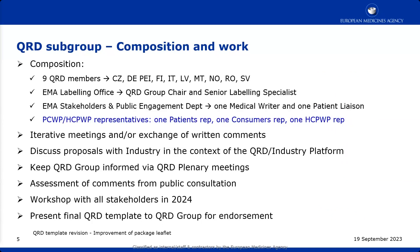For this QRD subgroup, the composition consists mainly of nine QRD members, plus us from the labelling office — Alexios and myself. We have liaised with Juan's department and have one medical writer nominated, and Kasia will be the patient liaison in the group. From your working parties, we would like one representative from patients, one from consumers, and one from healthcare professionals. We will have meetings as many as needed and will also exchange written comments. Proposals from this group will be discussed with industry via our platform, and we will keep the QRD group informed via plenary meetings.